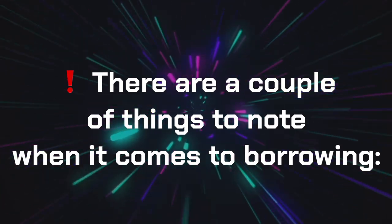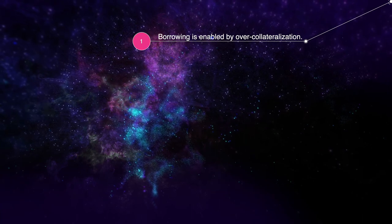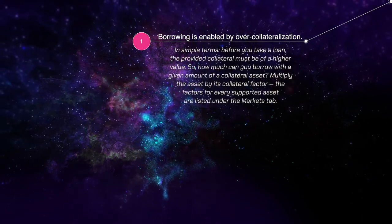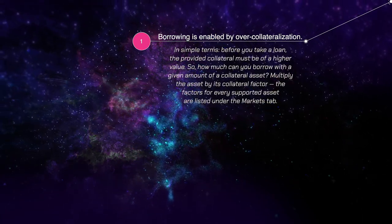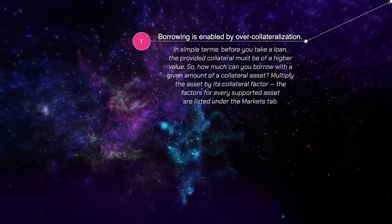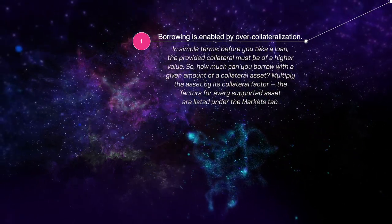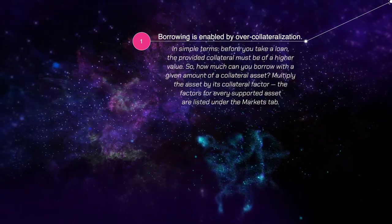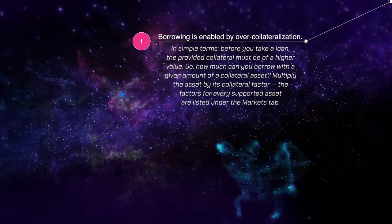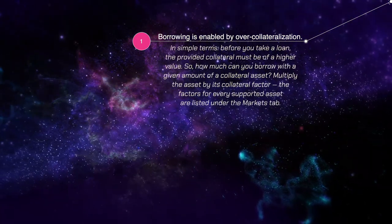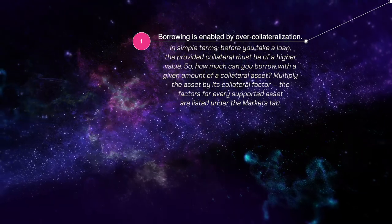There are a couple of things to note when it comes to borrowing. Borrowing is enabled by over-collateralization — in simple terms, before you take a loan the provided collateral must be of a higher value. To calculate how much you can borrow with a given collateral asset, multiply the asset by its collateral factor. The factors for every supported asset are listed under the Markets tab.